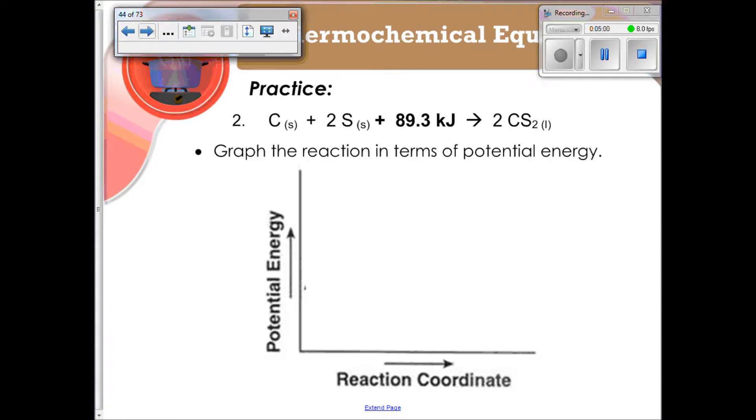So if we're going to write this one, remember this is endothermic, so something that looks sort of like that. We've got C and 2S here, 2CS2, and then the energy that's going to be absorbed is 89.3 kilojoules. And that is an endothermic reaction.